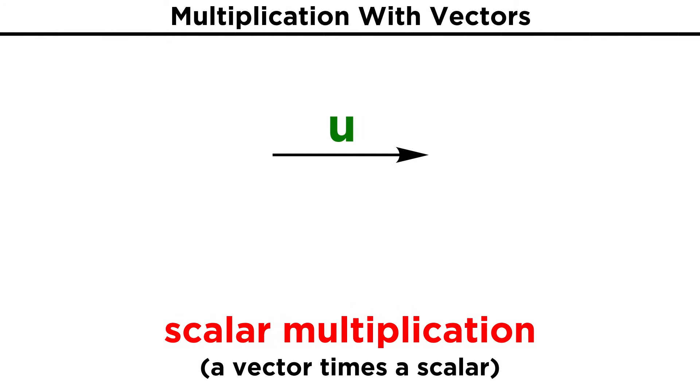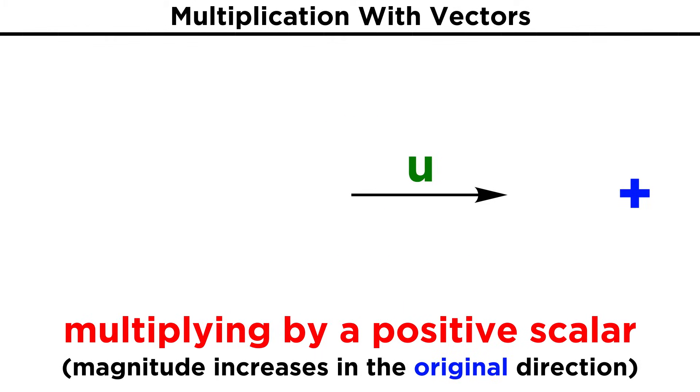We can also perform multiplication with vectors. The simplest way to do this is called scalar multiplication. This is when a vector is multiplied by a scalar, which is just a number. So if we have some vector U, and we multiply it by the scalar two, all we do is double the length of the vector, making it start from the same point, but reach twice as far in the direction it is pointing. So when multiplying a vector by a scalar that is greater than zero, we just multiply the length of the vector by the scalar.